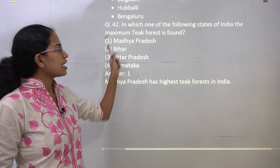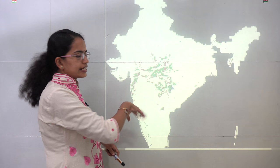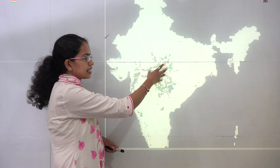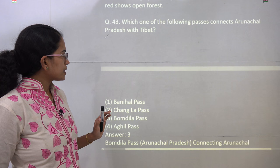The next question states that the maximum teak forests are found in the region of Madhya Pradesh. Looking at the map, the density of teak forest is shown across India, and you can see the maximum teak forests are concentrated in Madhya Pradesh. So the highest number of teak forests in India is found in Madhya Pradesh.